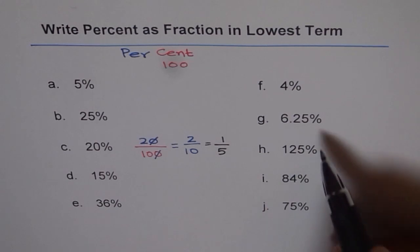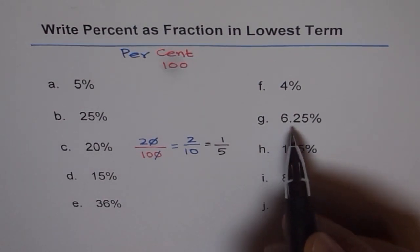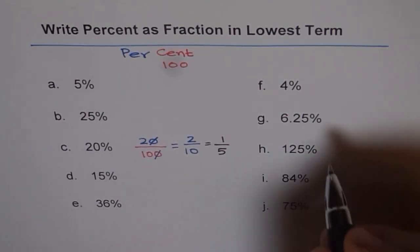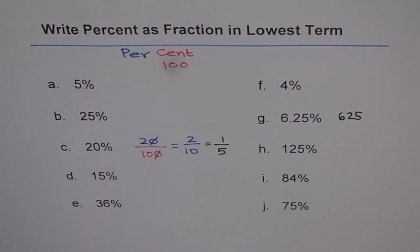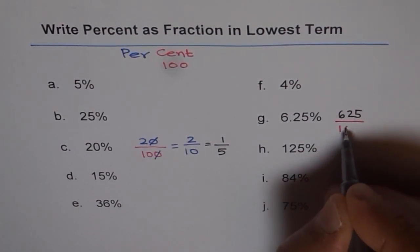Now here on the right hand side we have some numbers. Some are weird numbers. Let me try to do 6.25% for you. 6.25% means we will write 6.25 over 100. Over 100.